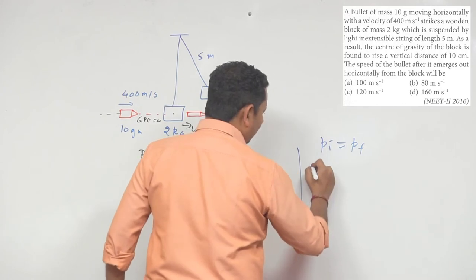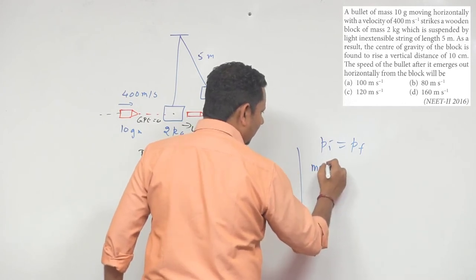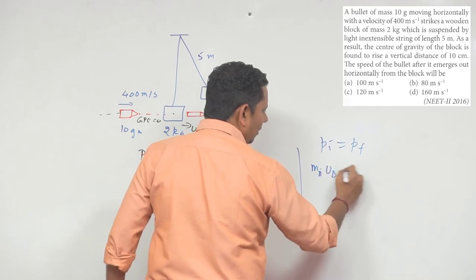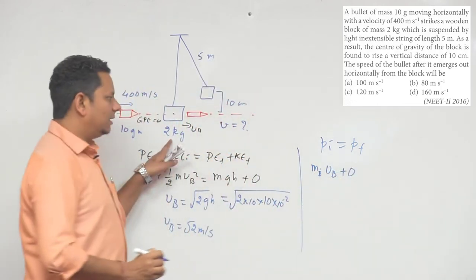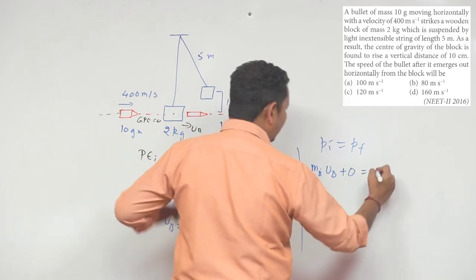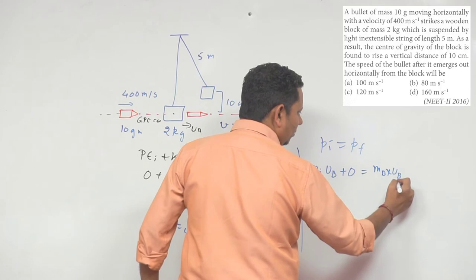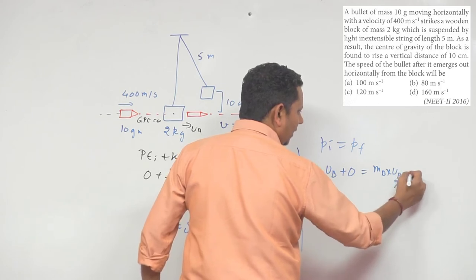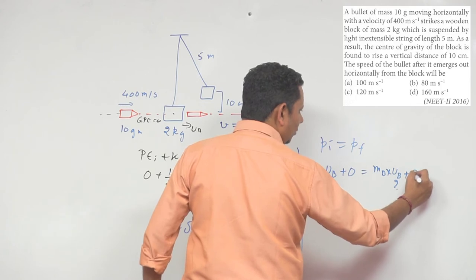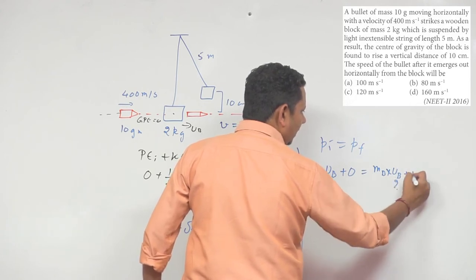The final momentum will be: mass of bullet multiplied by velocity of bullet (this is what we need to find, this is unknown) plus mass of block, which is 2 kg, multiplied by root 2 (we just found this velocity). Now we substitute the data